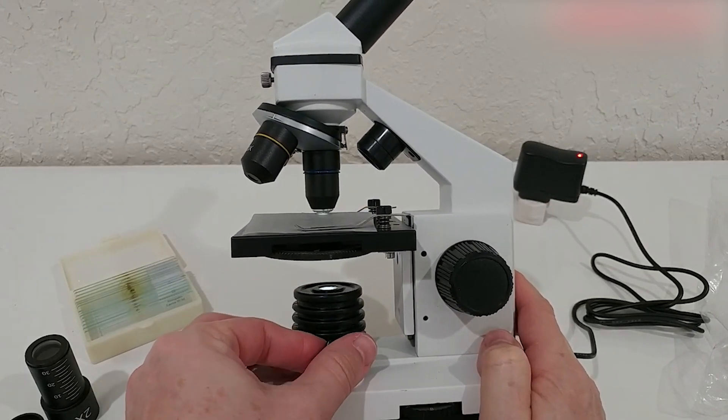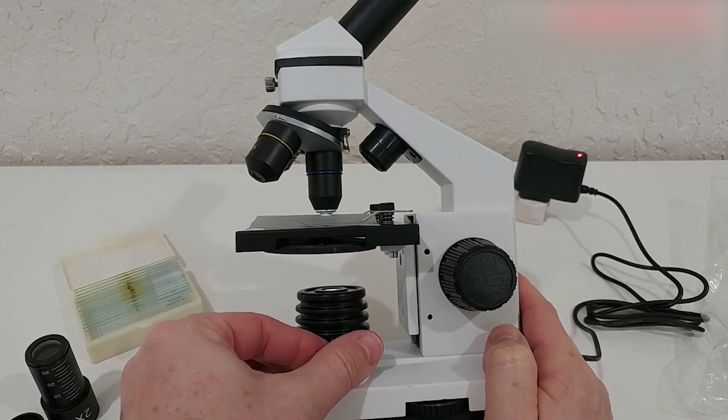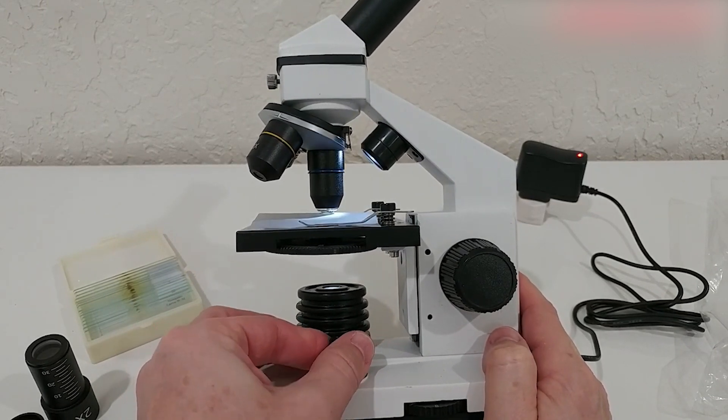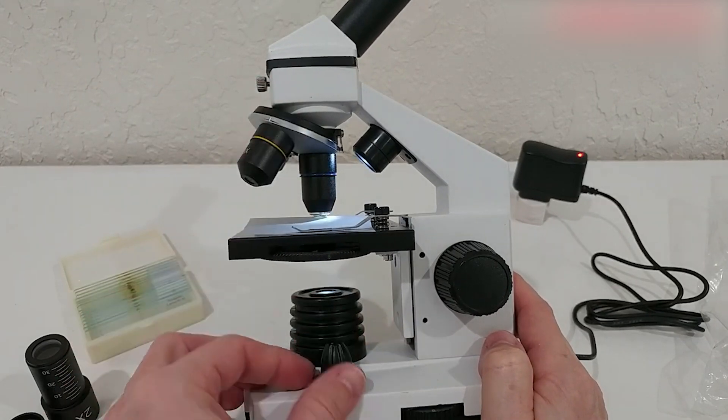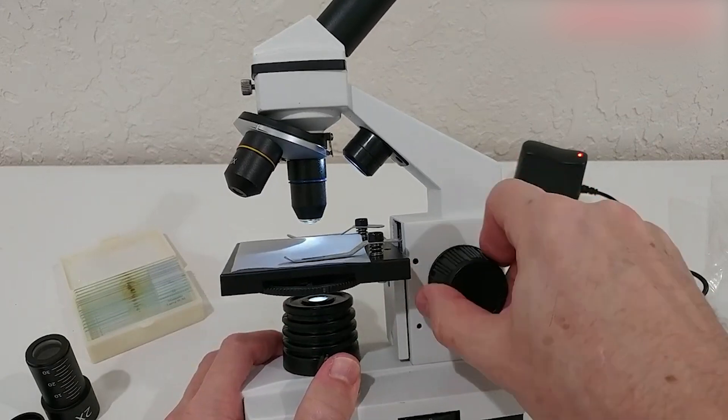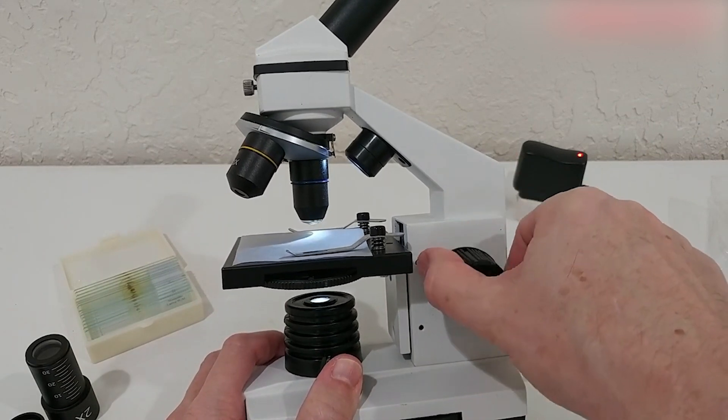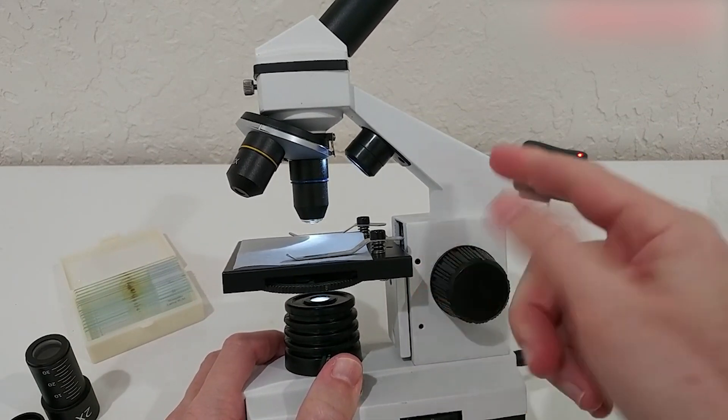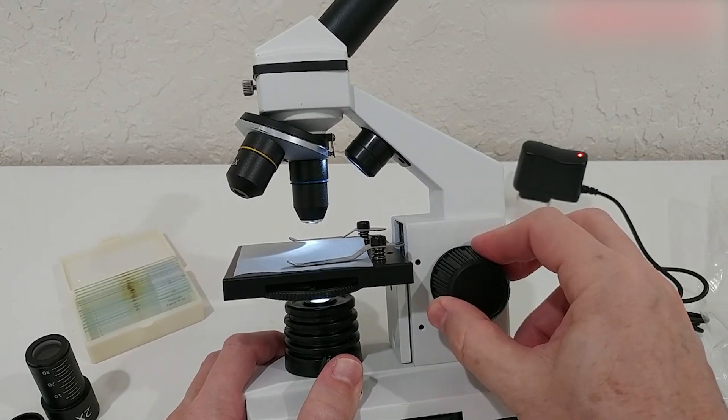The inclusion of a 0.65 NA single lens condenser with a disc diaphragm enhances image quality even further, delivering high-resolution, color-corrected images that reveal details in vivid clarity. You won't miss a thing when you explore with this level of illumination.